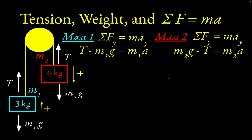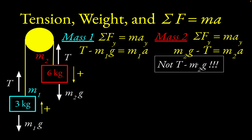Here is a huge pitfall students fall into: do not write T minus M2G on the left for mass two. Tension is in the negative direction according to our sign convention for mass two's motion. Once again, the physics is really done. We just have an algebra problem: one equation with T and A as unknowns for mass one, and another equation with T and A for mass two.